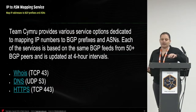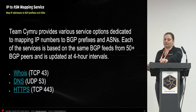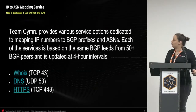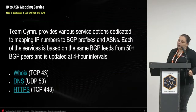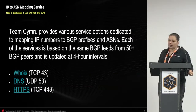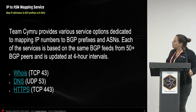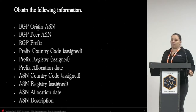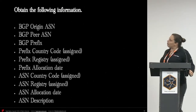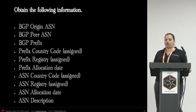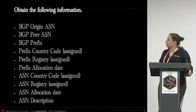Next on the list is the IP to ASN mapping service, which offers various service options dedicated to mapping IP numbers to BGP prefixes and ASNs. This information gets updated every four-hour intervals and provides details like BGP origin, ASN, BGP prefix, country code, ASN registry, allocation date, and a description.